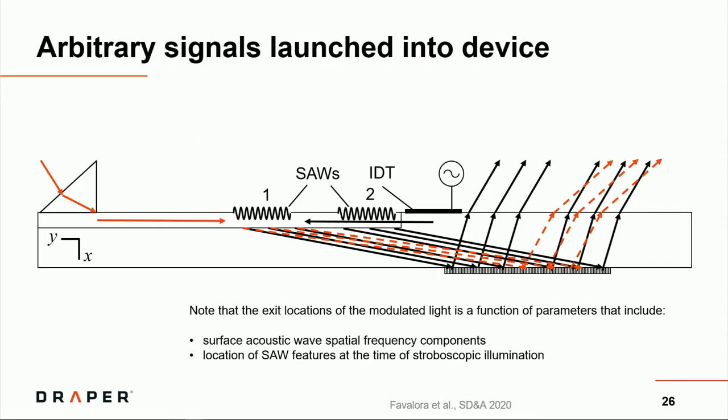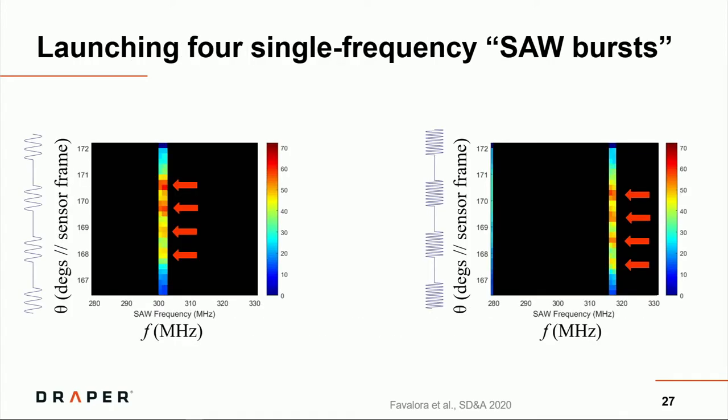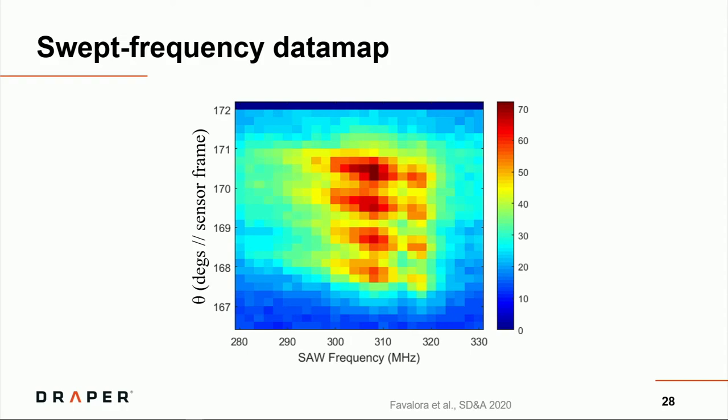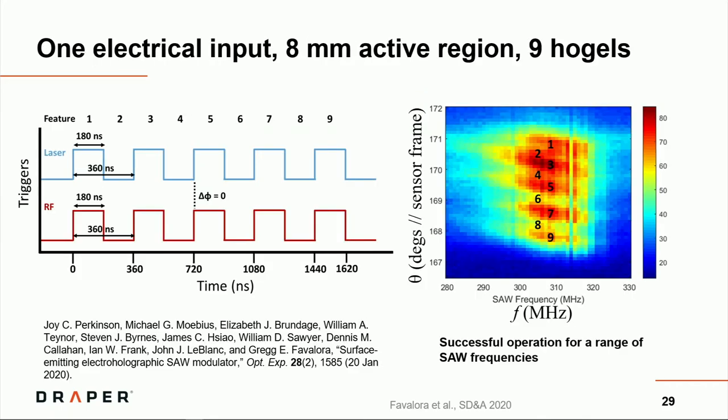We experimented with launching various arbitrary signals into the device. The exit points are a function of a variety of things, such as the spacing between the signals, the angles that you're using, and also the timing of the SAWs. Here's an example of four single-frequency SAW bursts, causing the emission of light at four different angles. This is the swept frequency data map of the whole thing. You can see for a variety of SAW frequencies, you cause the output angles of the light to change. To see just how far we could stretch this thing and how long of a hologram we can get and how many HOGLs we could program into it, we believe we got nine at least. I redirect you to the recent Optics Express paper about how this works.